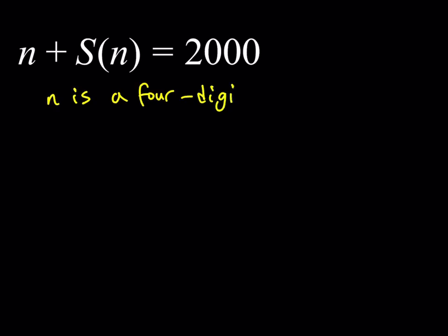So starting with that assumption, n is a four-digit number. We can actually say something about n and S(n). Obviously, since n is a positive integer in this case, S(n) is also going to be greater than zero.